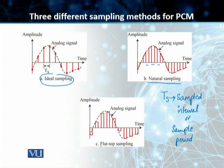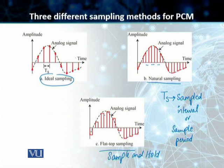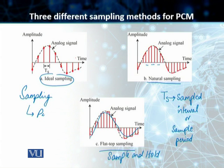Another common method of sampling is called flat-top sampling, also known as sample-and-hold. This is deployed using a circuit, and it creates flat-top samples which are of a similar shape to the analog signal. It is worth noting that this sampling process is also known as pulse amplitude modulation.